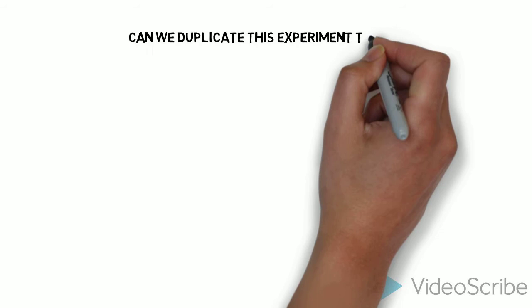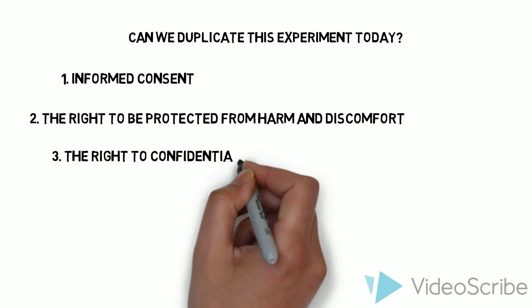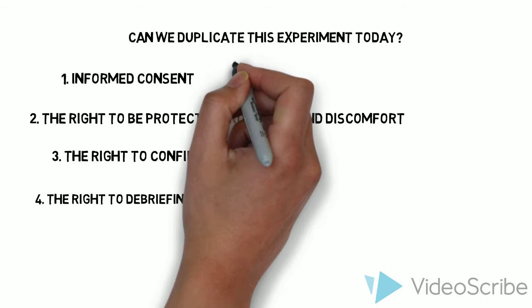Is it proper to duplicate this experiment today? According to the American Psychological Association, there are four basic ethical guidelines for research with human participants, which are informed consent, the right to be protected from harm and discomfort, the right to confidentiality, and the right to debriefing.